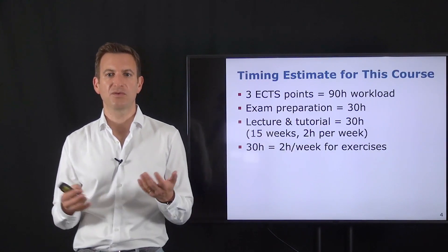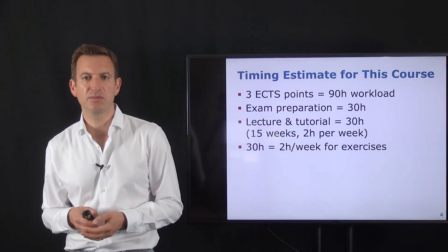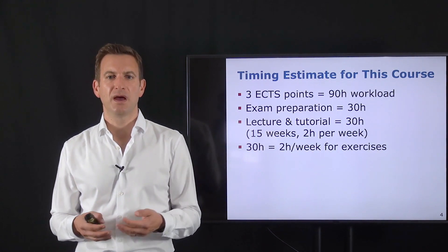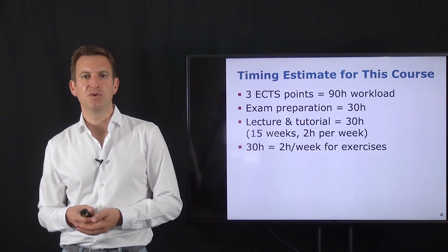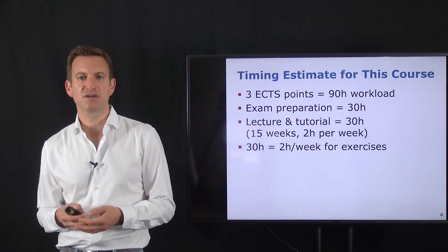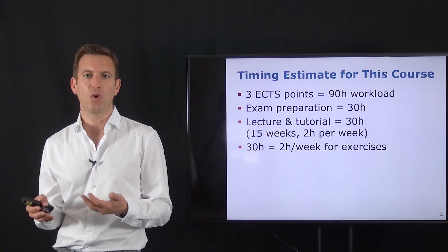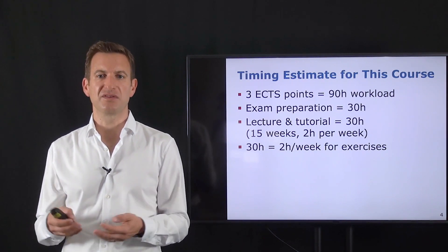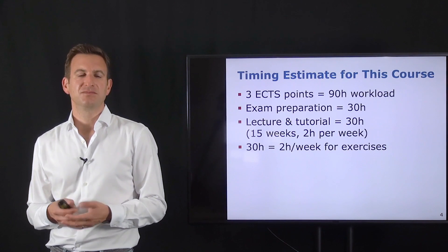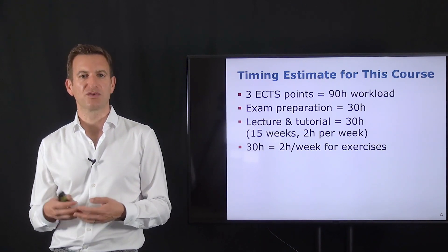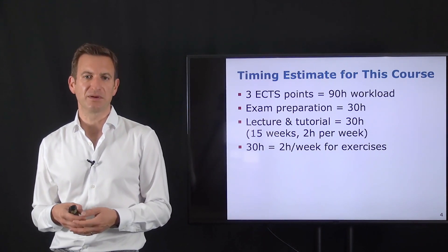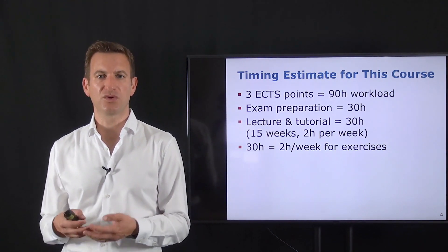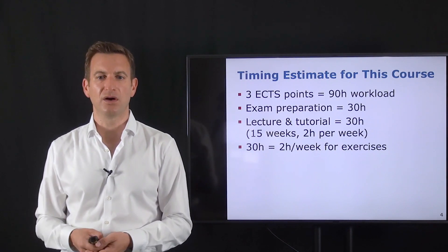A few words about timing. This course is a rather short or small course with three credit points. That means an approximate workload of 90 hours over the whole term. If we assume you do a 30 hour exam preparation, that means there are 60 hours left. We will have one hour of teaching or tutorial on a weekly basis. So this gives another 30 hours. That means you have kind of two hours left per week for your homework assignments just to calibrate you a little bit so that you have an idea how much work you should be put into that course or what's our requirement on what you need.